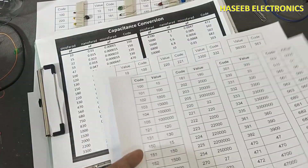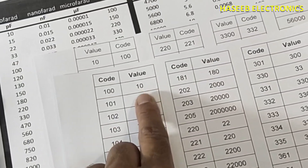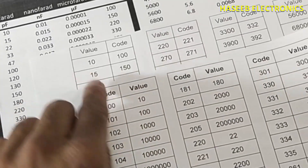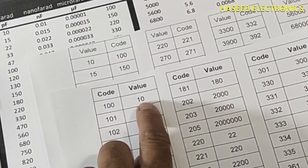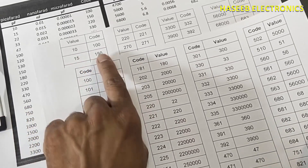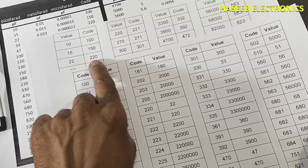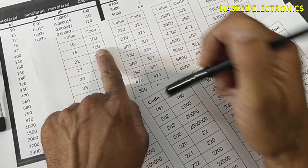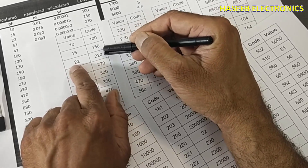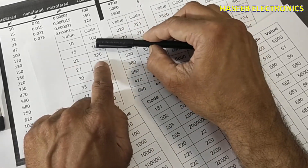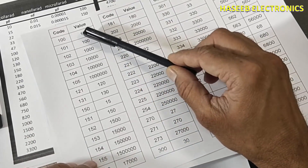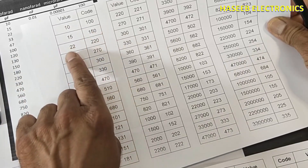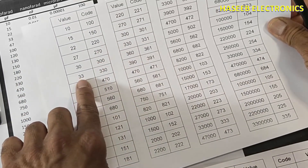I separated this chart into two sections: the code and the value in picofarads. If the capacitor is 10pF, the code is 100; if we have 15pF, the code is 150. Checking the chart: 100 code is 10pF, 101 code is 100pF. For 22pF the code is 220. Between 15 and 20pF there is no step, so we can use 220 code (22pF) instead of 150. Using 101 would give a very large capacitance — we must follow this chart.